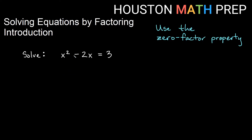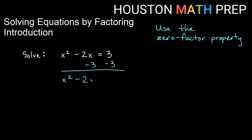Let's look at our second problem: x² minus 2x equals 3. At the beginning of the video, we said something times something equals 4 — we could put a lot of things in there, and none of those numbers had to be specific. So we only want to solve by factoring when we have an equation equal to zero. We need to get zero on the right-hand side first, so we subtract 3 on both sides. We get x² minus 2x minus 3 equals zero. Now if I can factor the left side and have factors equal to zero, I can solve this.